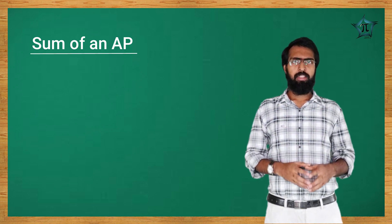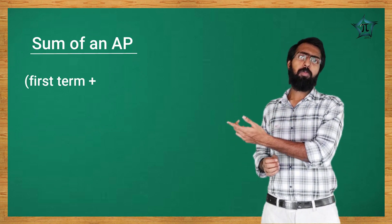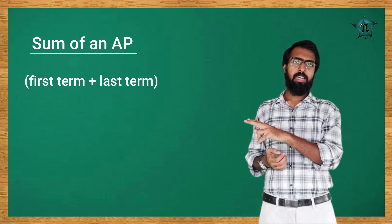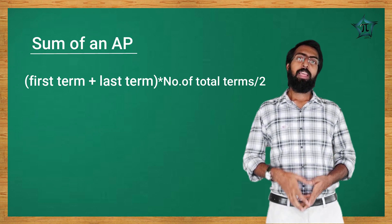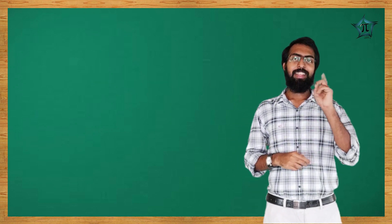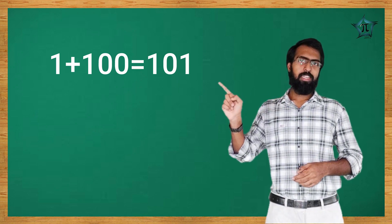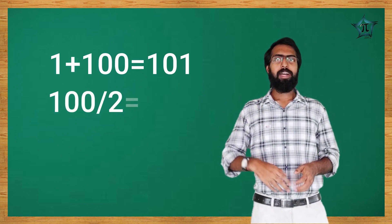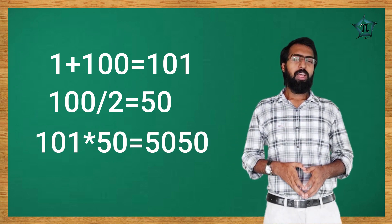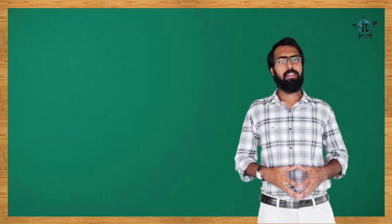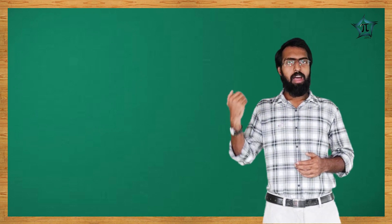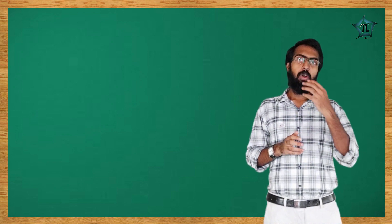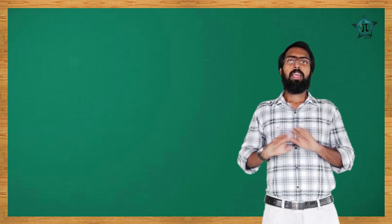How do we find the sum? Using the first term and last term method. For 1 to 100, this is 100 terms. The total sum formula is: first term plus last term, multiplied by total number of terms, divided by 2.